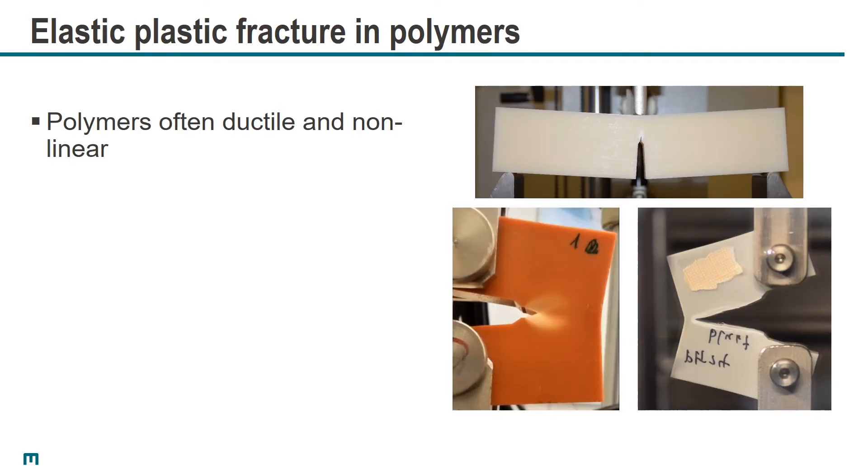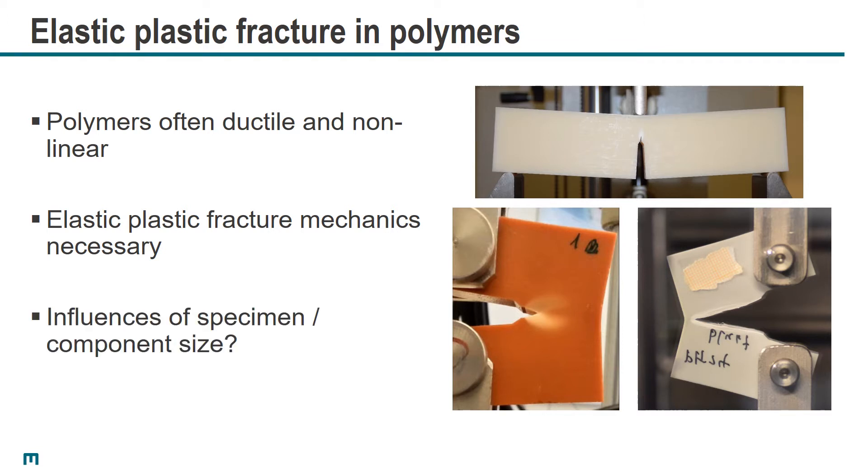I'd like to give a short introduction about elastic-plastic fracture mechanics testing in polymers. Polymers often behave quite ductile and non-linear, as you can see on the right-hand side. This necessitates the use of elastic-plastic fracture mechanics. But since we want to also characterize the behavior in different specimens, sizes, or even components, we would like to know the influence of the exact specimen size or component size on fracture behavior.